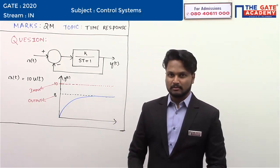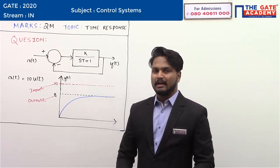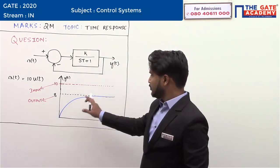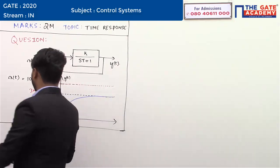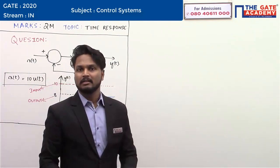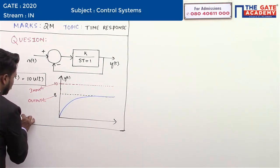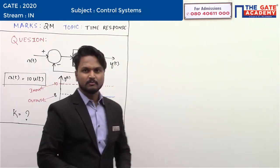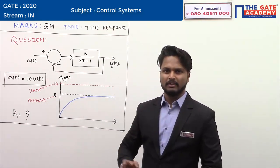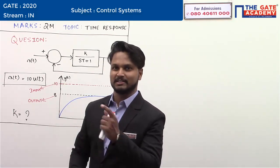The first question: a unity feedback system is given and the value of K is asked. The response is also given when the input x(t) = 10·u(t) is applied. When this input is applied, the response of the system is given and you have to find out the value of K.